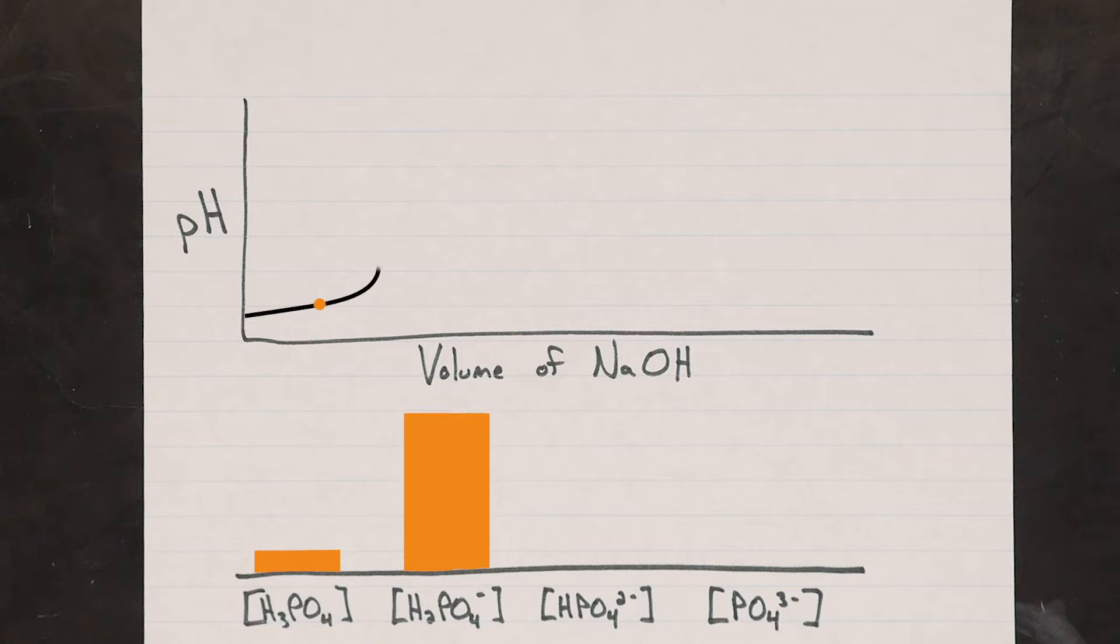Sooner or later, however, we add enough base to exhaust the supply of conjugate acid and the pH sharply rises. This is what we call the equivalence point, since now we've added an equivalent amount of NaOH to the amount of phosphoric acid that we have started with.